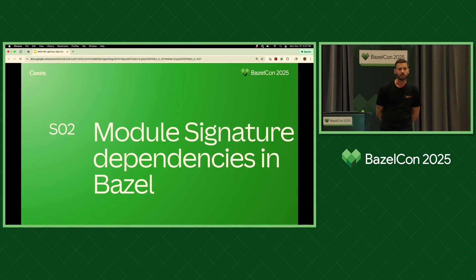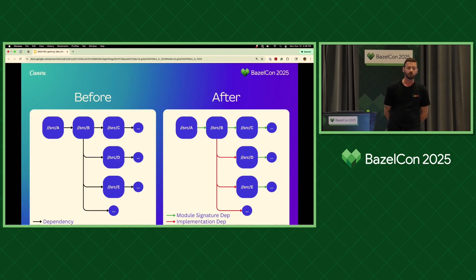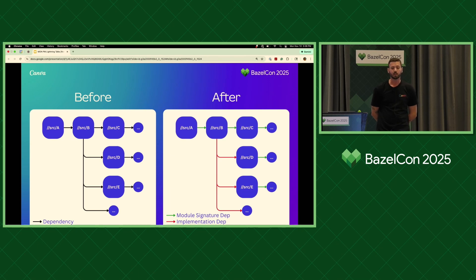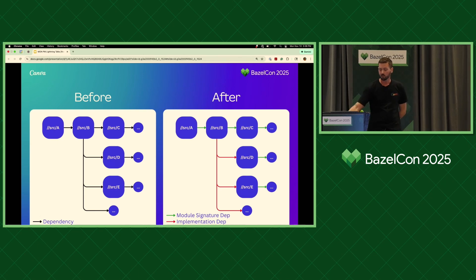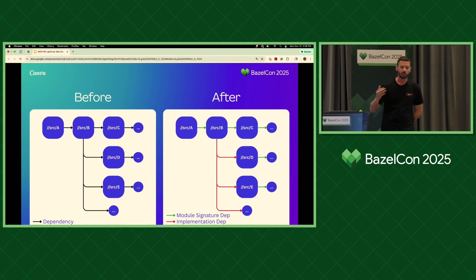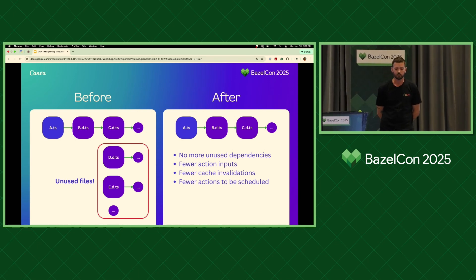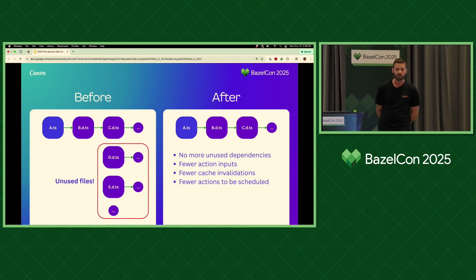We can also use this new tooling in our build file generation to vastly reduce the dependency graph of our targets. Before, we used to just emit the implementation dependencies into our build files. Afterwards, by using OXC, we're able to emit both the implementation dependency graph and the module signature dependency graph into the build files. When our type check action runs, instead of collecting transitive dependencies using the implementation dependencies, we collect them via the module signature dependencies. The result is that we can cull all those useless files — fewer action inputs per action, fewer duplicate validations per run, and fewer actions that need to be scheduled altogether.